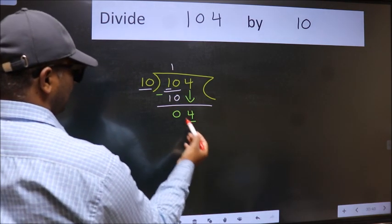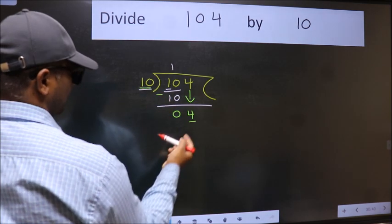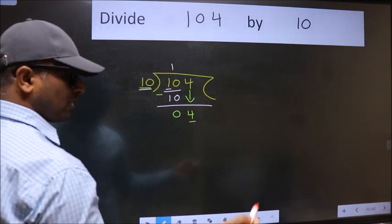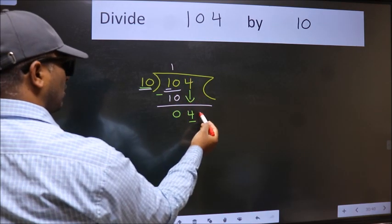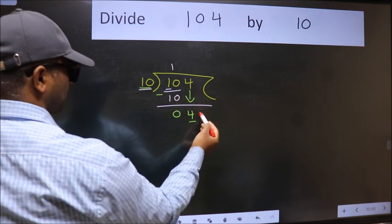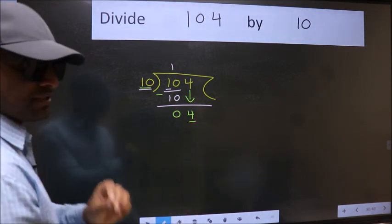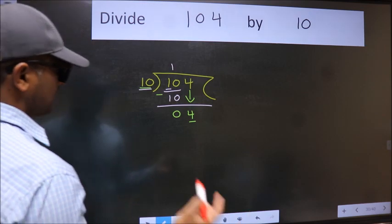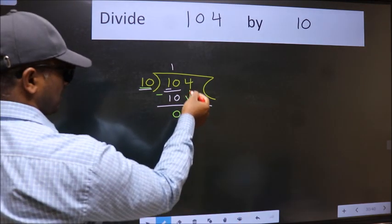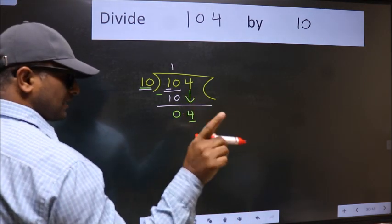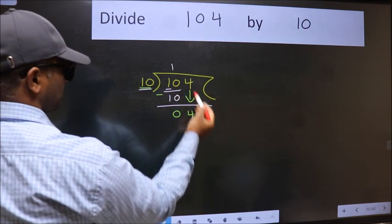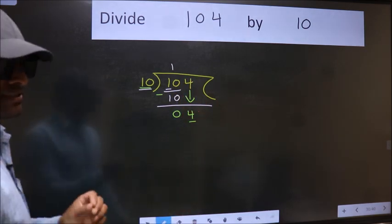So, what many do is they directly put a dot and take 0, which is wrong. Why is it wrong? Because just now you brought this number down and in the same step, you want to put a dot and take 0, which is wrong.